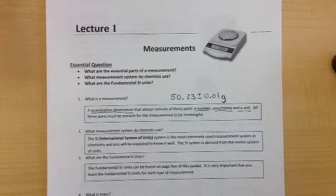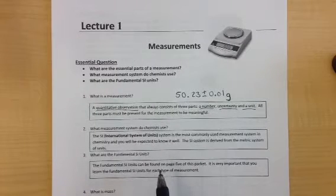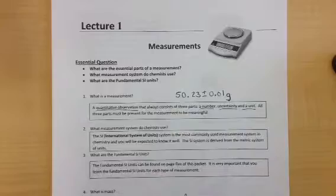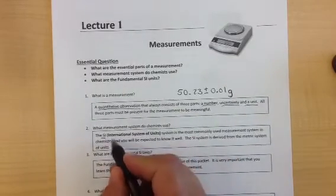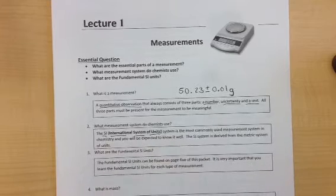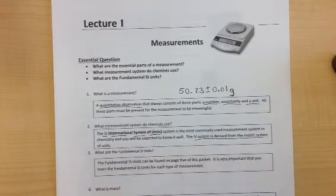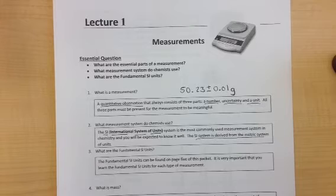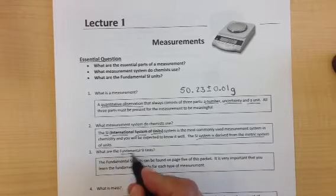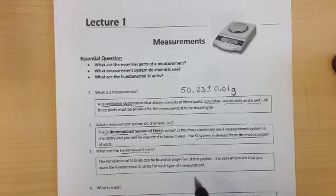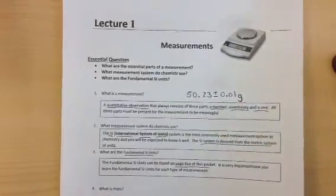That is a measurement and what needs to be included in a measurement. What system do we use as chemists to measure objects? We use the SI system, which stands for International System of Units. This system is used by all chemists throughout the world so we can communicate with one another. The SI system is quite easy. It's derived from the metric system, which you're probably familiar with in other science and math classes. The fundamental SI units that we use in chemistry can be found on page 5 in your packet. Let's turn to that and look at those fundamental SI units.